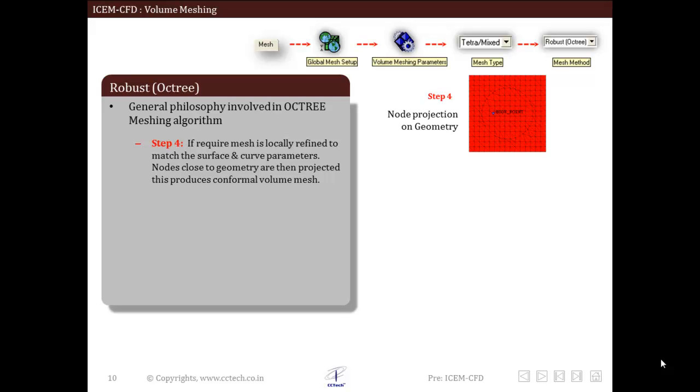Now we will discuss the fourth step. Many times surface mesh size is smaller than the global mesh size. In order to satisfy this requirement, volume mesh is locally refined. Generally this can be observed in the cut plane of the volume mesh. Nodes of the volume mesh near to the surface are projected to the geometry. This produces conformal volume mesh.